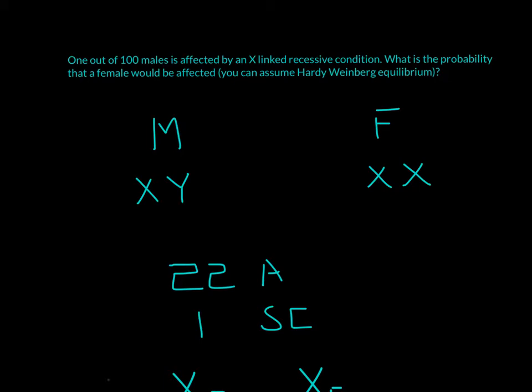So this is basically giving us the disease frequency. It's saying 1 out of 100 males is affected by an X-linked recessive condition. So this is the disease frequency - how likely is the male to have an X-linked condition. So what do we need to find out? We need to find out the allele frequency.